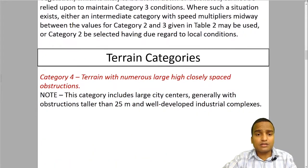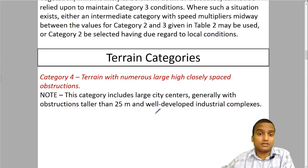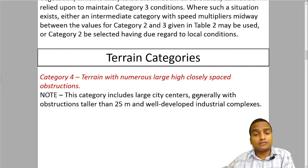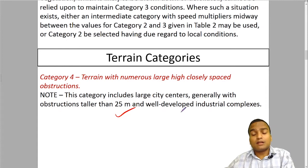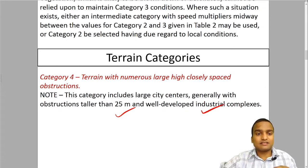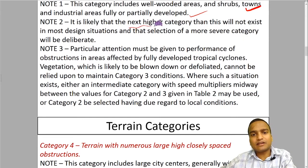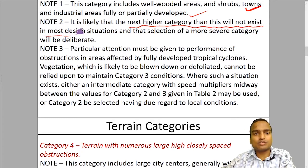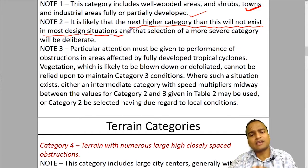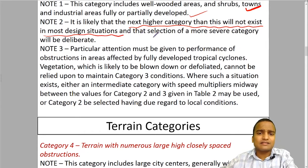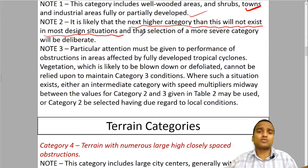The next terrain is terrain category 4. Here it is said terrains with numerous large high closely spaced obstructions. They include large city centers like Dubai, Singapore, and Shanghai, generally with obstructions larger than 25 meter and well-developed industrial complexes. We can understand this terrain category 4 will be almost improbable in most of the cases. It is likely that the next higher category than this will not exist in most design situations. Most design situations come up to terrain category 3 only, and that selection of a more severe category will be deliberated depending on the choice of the person.